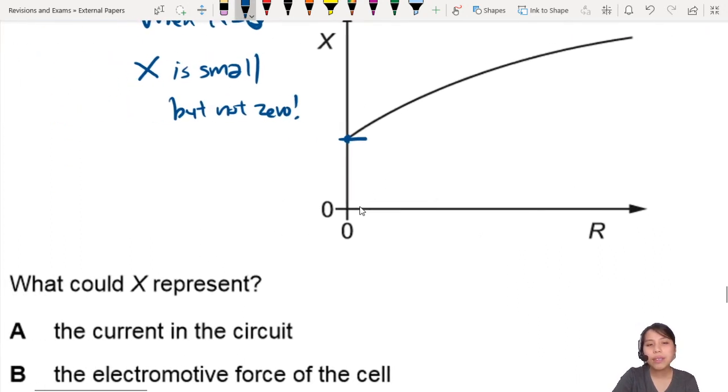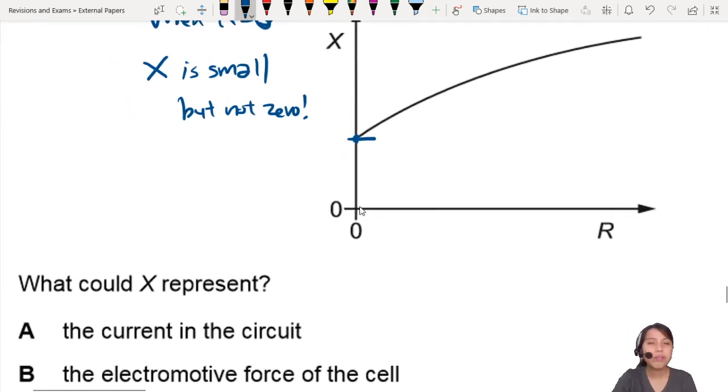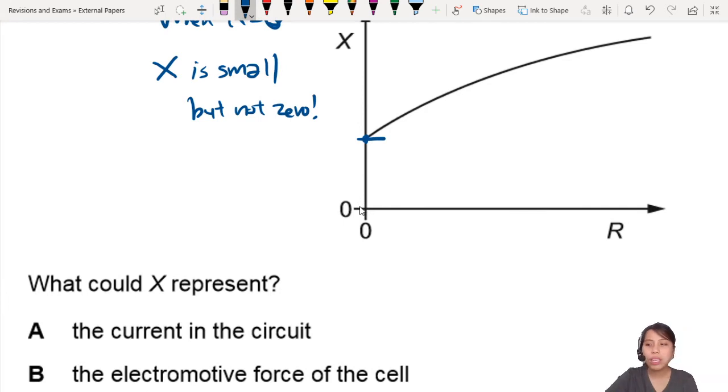Because current and resistance are inversely proportional. So if your resistance is getting bigger and bigger, your current should drop. But why is this increasing? The wrong trend. So this is not correct. You want something here that will increase when resistance increase.